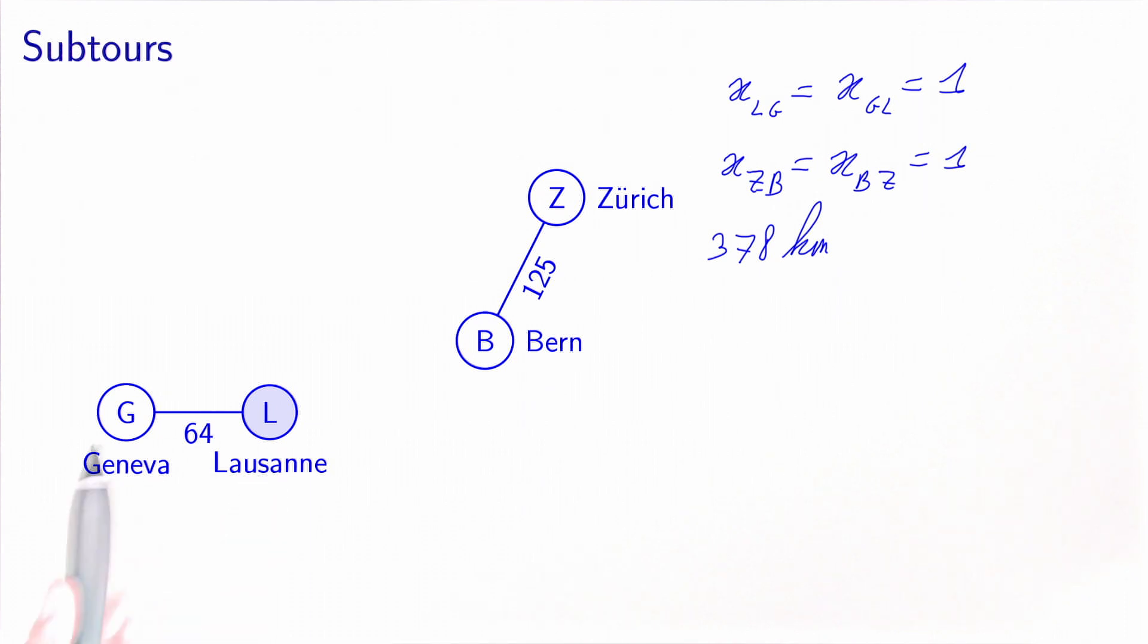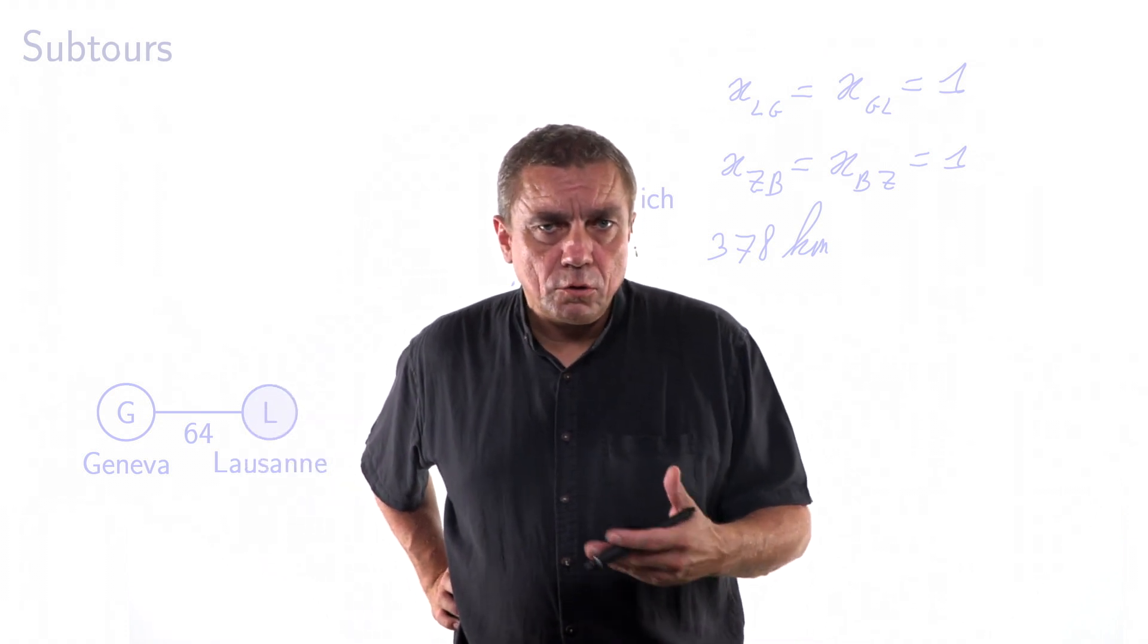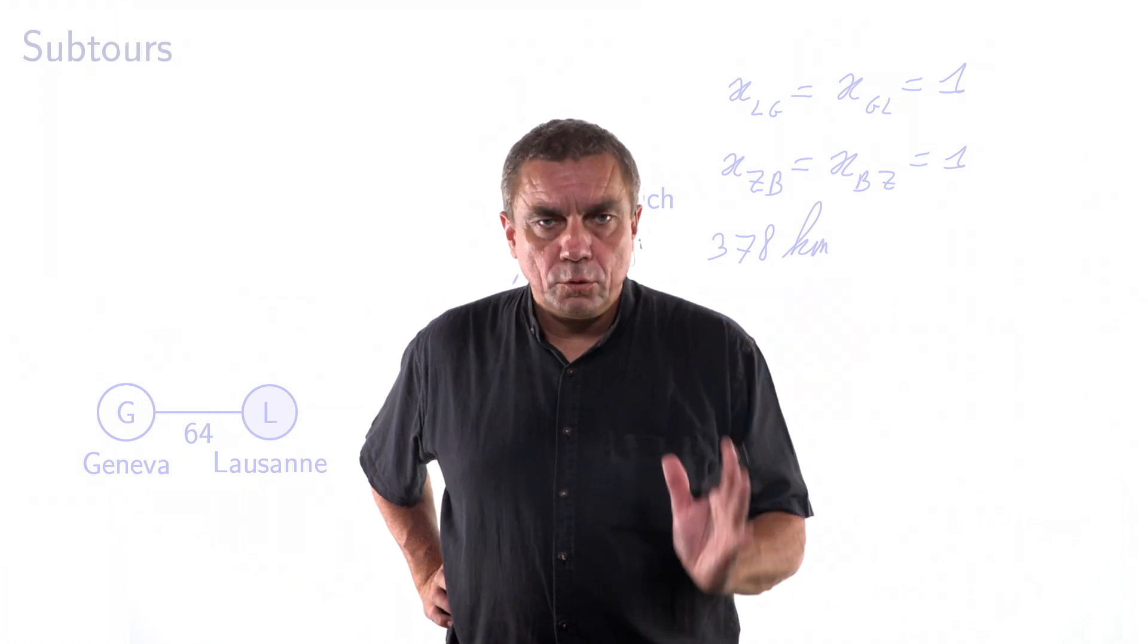So we say that this solution contains subtours. We have two subtours: one from Lausanne to Geneva back to Lausanne, and one from Bern to Zurich back to Bern. The constraints that we have defined are not sufficient. Indeed, we need to add new constraints that will eliminate these subtours, because they don't belong to a valid solution. It is important to note that the problem comes from the fact that some subtours are completely disconnected from the home. There are several ways to eliminate subtours, called subtour elimination constraints. In this video, we will review one way of doing this.